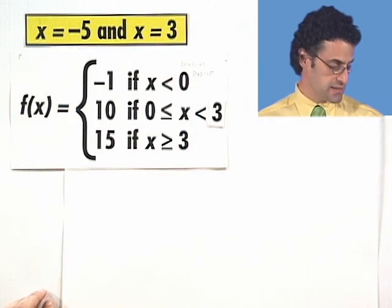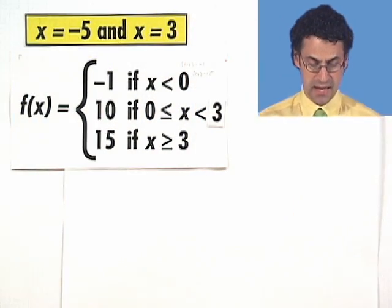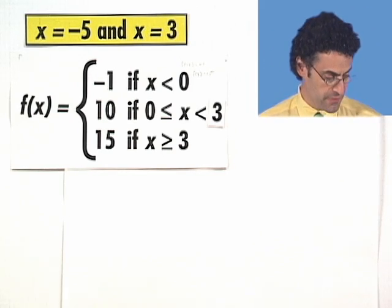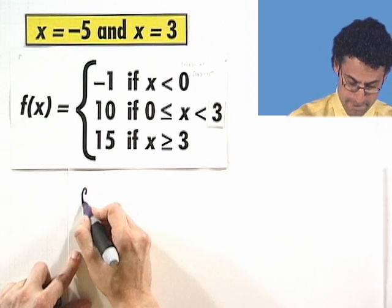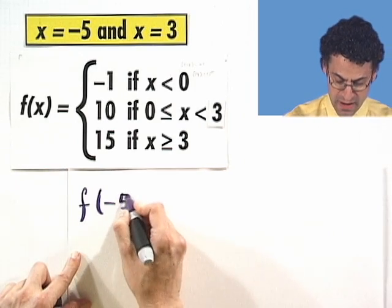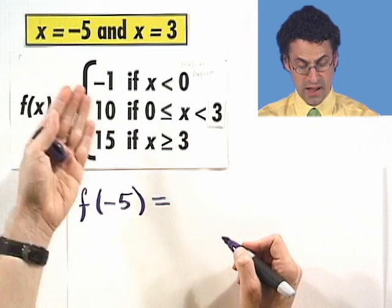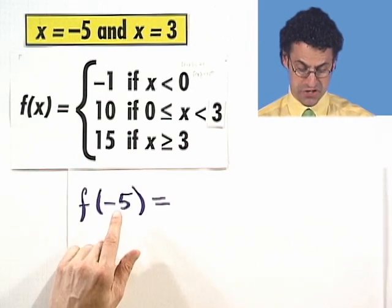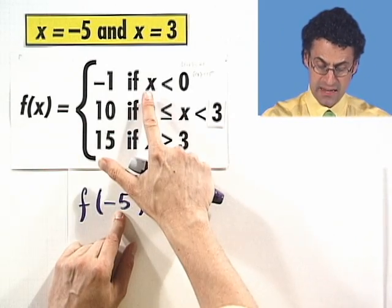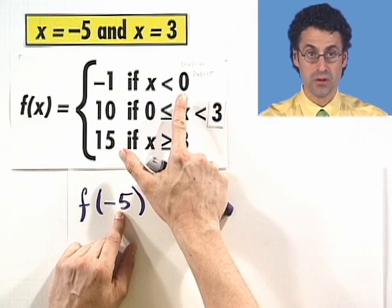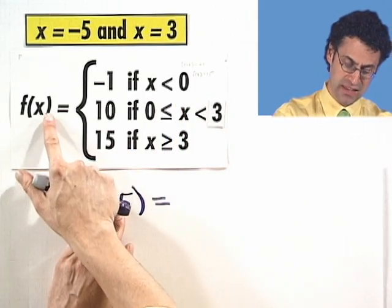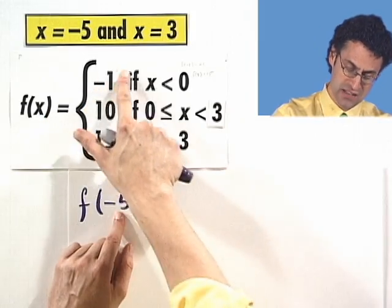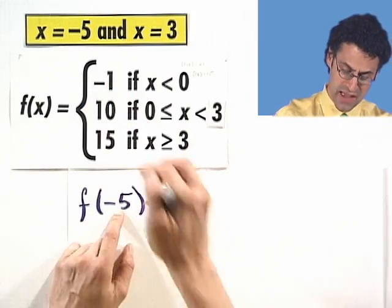Let's find f of x. If x is going to be negative 5, let's figure out what f of x is. So f of negative 5 will equal, well, I don't know which it equals, so I have to ask a question about negative 5. Is negative 5 less than zero? Well, yeah, actually it is. So therefore, I stop immediately, and I know that the case that I'm looking at is this case right here. So the function is defined to be that, which is negative 1.